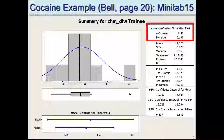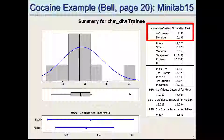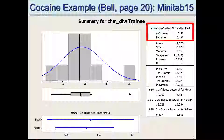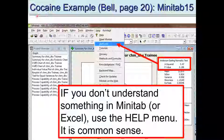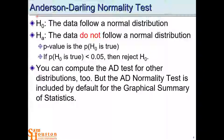In the graphical summary from last lecture, in the top right-hand corner is the Anderson-Darling normality test. It has a P-value — that's the probability the null hypothesis is true — but you need to know what the null hypothesis is. If you've never heard of the Anderson-Darling test, go to the Minitab help file and look it up. The null hypothesis for that test is that the data follow a normal distribution.